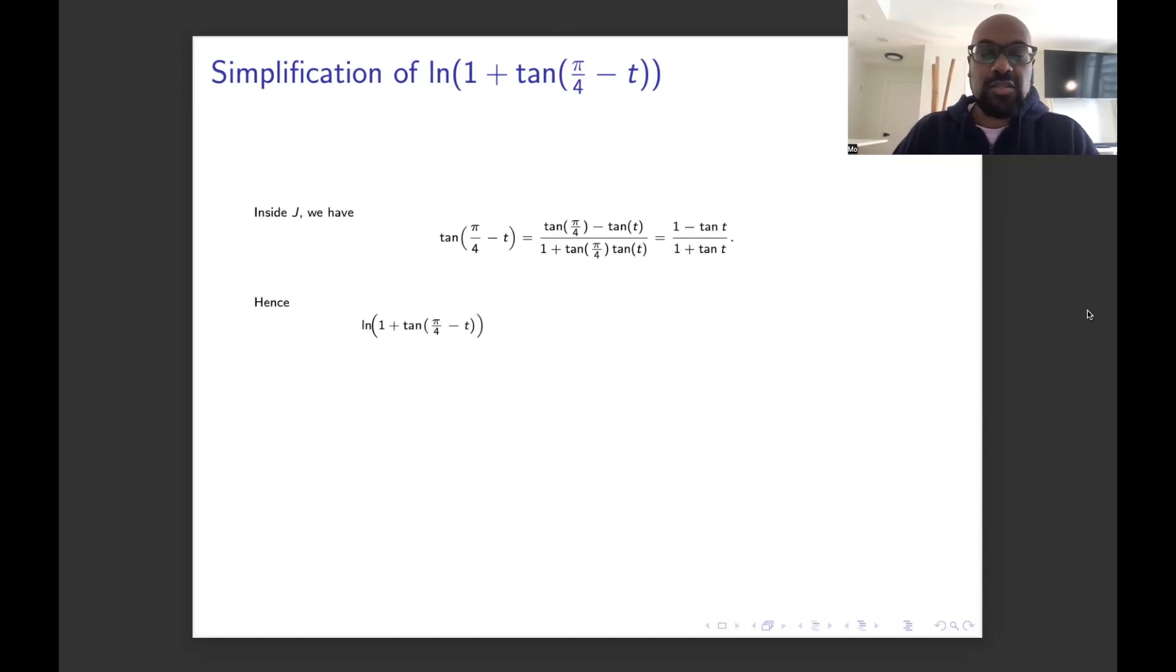Okay, so if you go back to the expression we had for the integral for j, we get the ln of 1 plus tan of this quantity, which now becomes ln of 1 + (1 - tan t)/(1 + tan t). Let's try to simplify this if possible. So the first thing we can notice is we can write this as one fraction. We'll get ln of (1 + tan t + 1 - tan t) all over (1 + tan t). And then the tan t and the minus tan t in the numerators cancel to give us ln of 2 all over (1 + tan t).